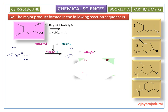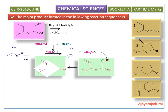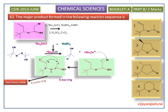This radical abstracts bromine from the starting material, leaving a new carbon radical. This radical has two opportunities to undergo cyclization: the first is 6-endo-trig cyclization, and the second is 5-exo-trig cyclization. 6-endo-trig cyclization is less favorable than 5-exo-trig cyclization, so we observe 5-exo-trig cyclization.